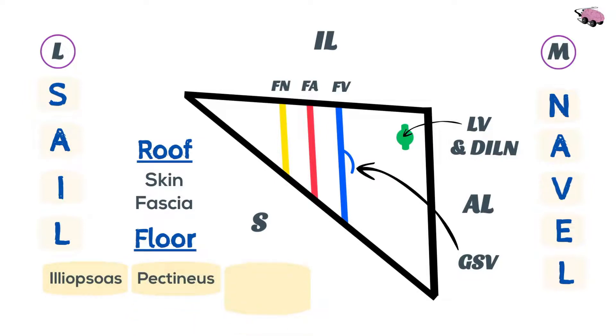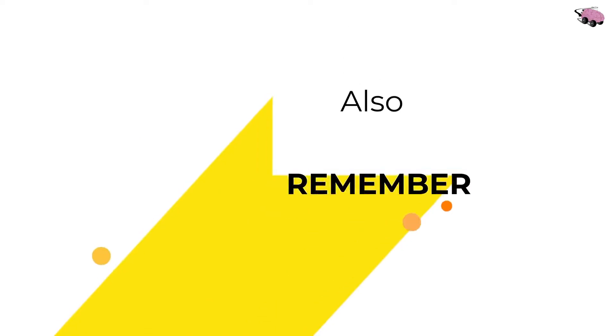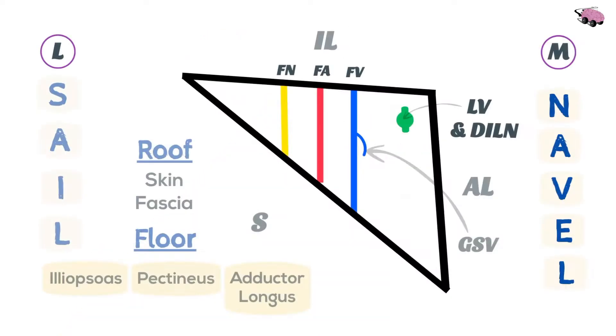Also remember this: the structures of the femoral triangle are covered by a femoral sheath. It covers the femoral artery, the femoral vein, empty space, and lymph nodes. The femoral nerve is not inside the sheath. It covers from here to here.